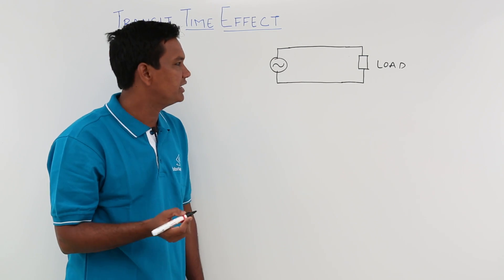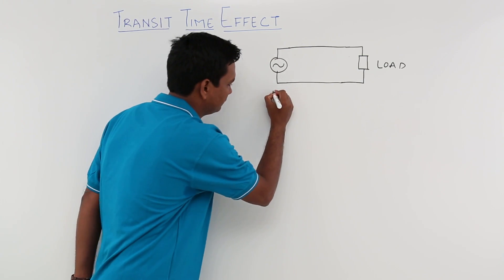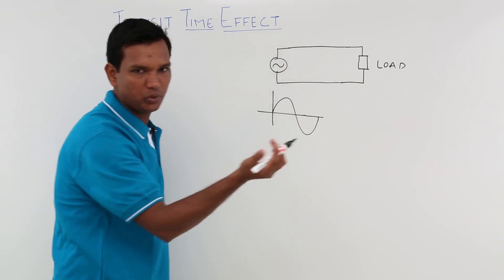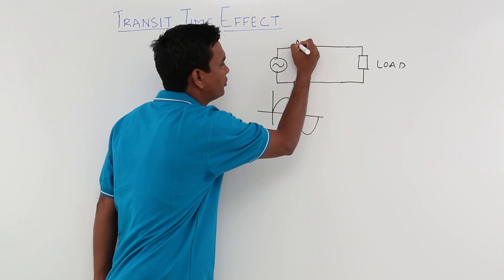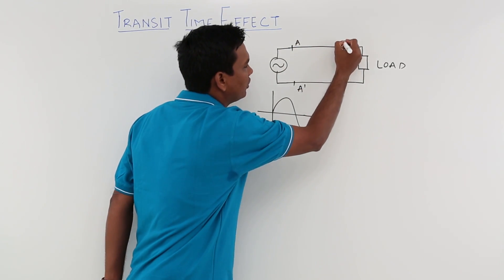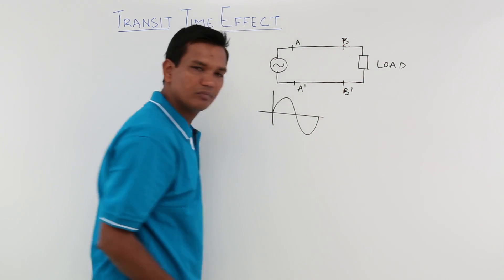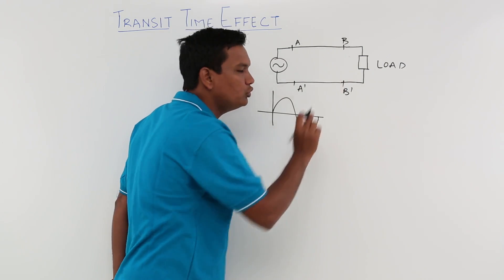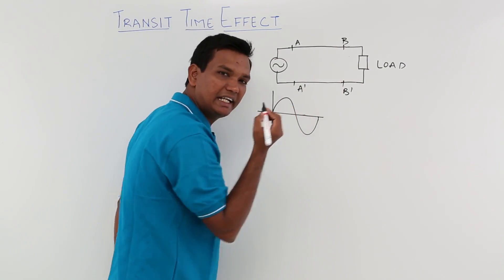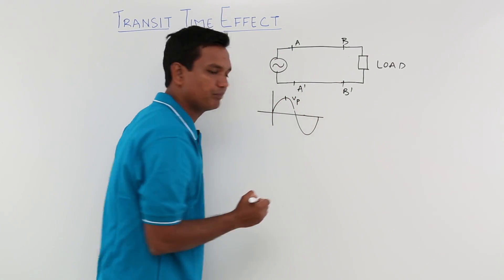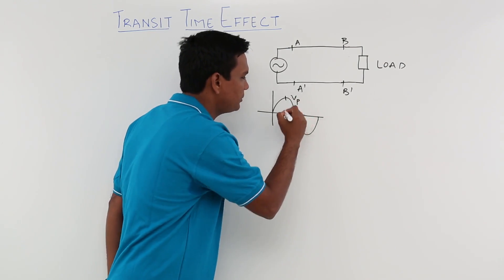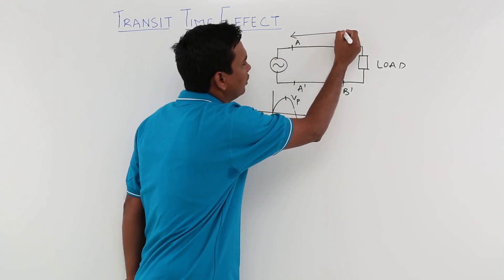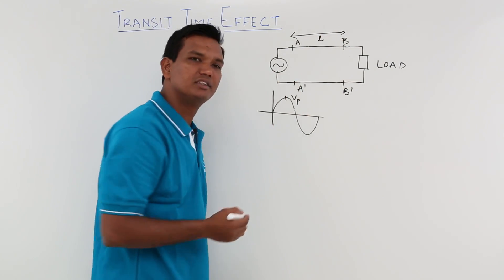Now, let us say that I want to transmit a sinusoidal voltage from one point to another point. Let me call these points AA dash and BB dash. So I want to transmit this sinusoidal voltage from AA dash to BB dash. At any instant of time, let me call the voltage VP. Let us say that the length of this transmission line is L — so the length between these two points is L.